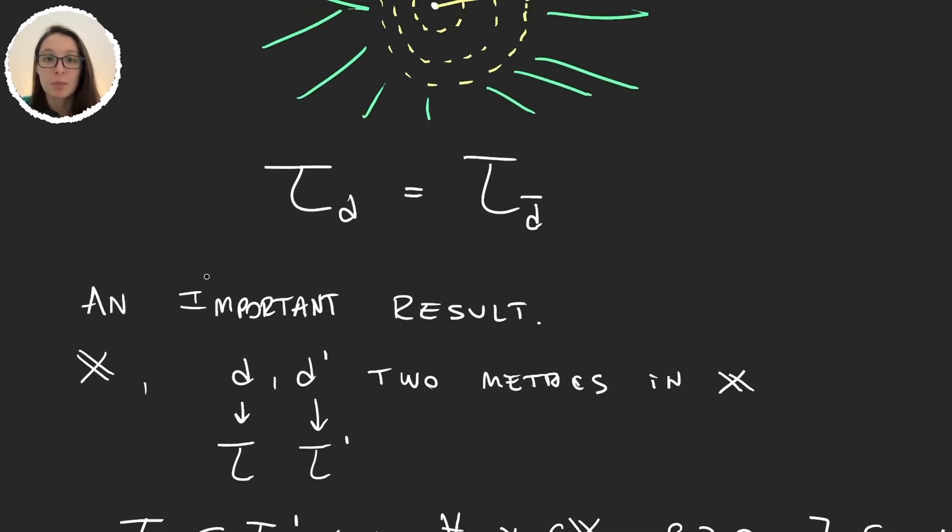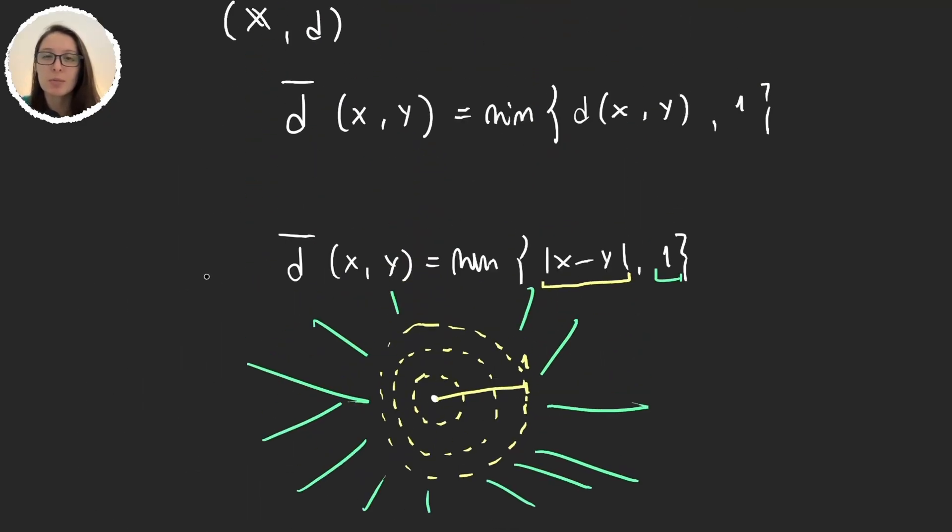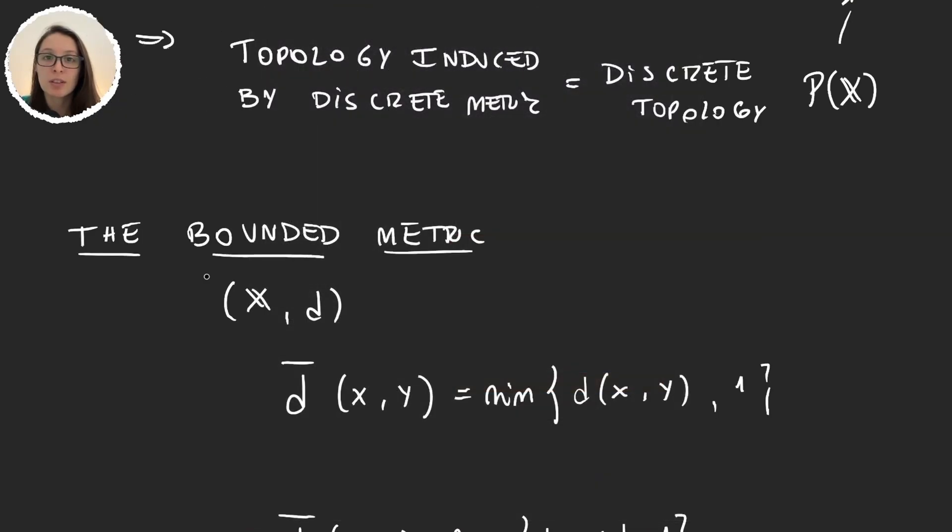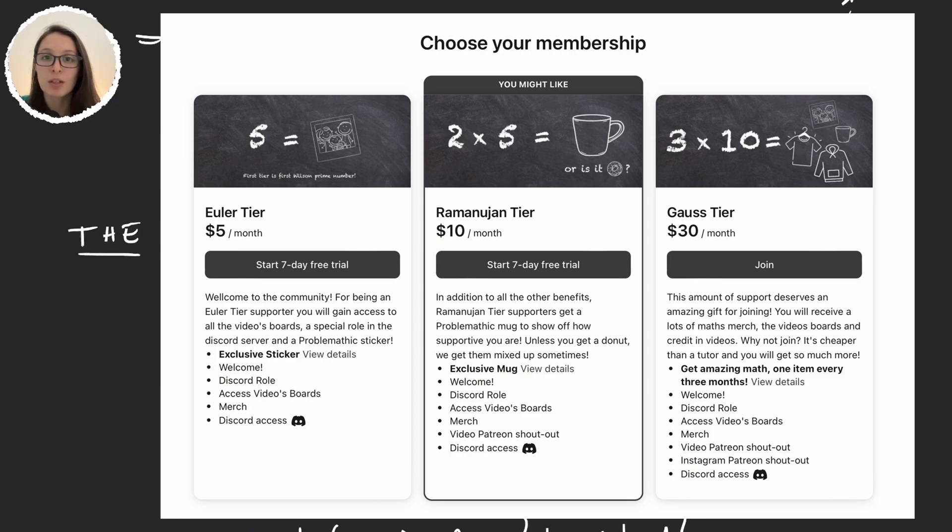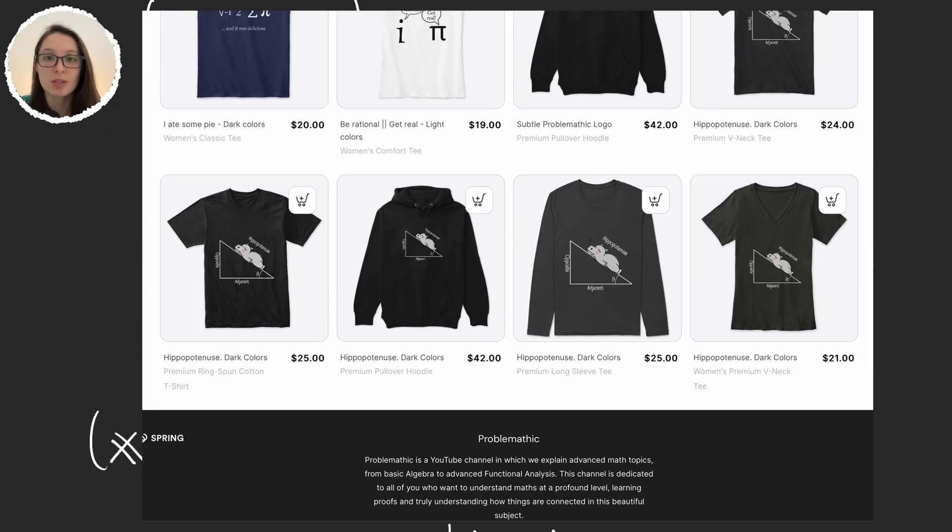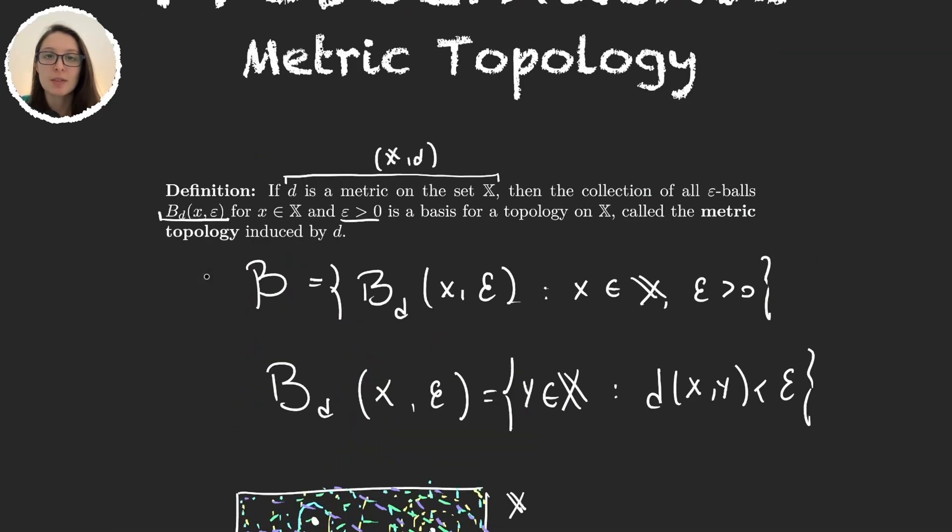So with this we finish the video. Remember that if you want to support the channel there are many ways for you to do so. You can make donations on ko-fi, you can also support us on Patreon to get exclusive content and amazing merchandise, or you can buy a t-shirt in a mathematics t-shirt store. See you in the next one.